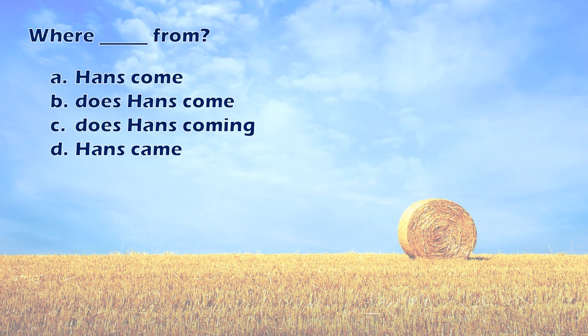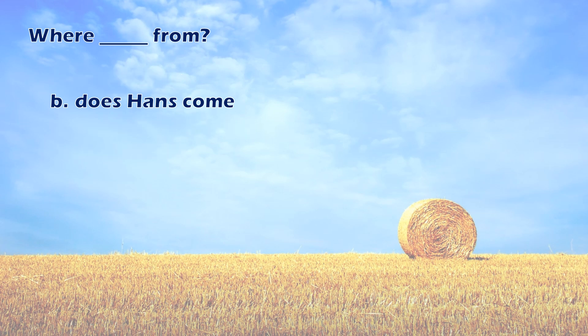Where blank from? A. Hans come. B. Does Hans come. C. Does Hans coming. D. Hans came. The answer is B. Does Hans come. Where does Hans come from?